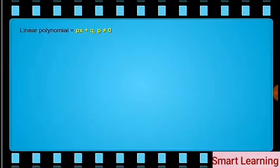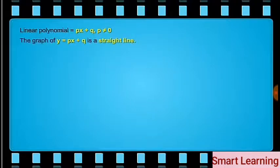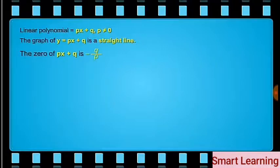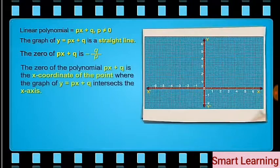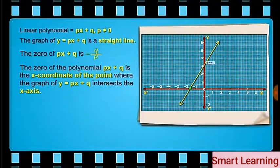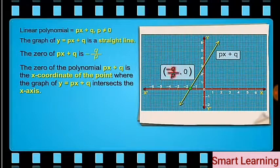First, take a linear polynomial px plus q, where p is not equal to zero. We know that the graph of y equal to px plus q is a straight line. We also know that the zero of px plus q is minus q upon p. The zero of the polynomial px plus q is the x-coordinate of the point where the graph of y equal to px plus q intersects the x-axis.